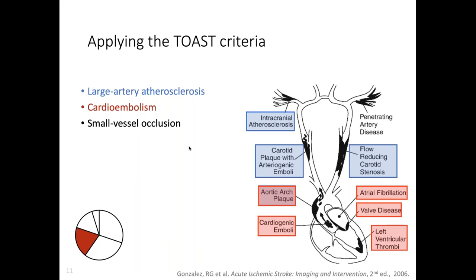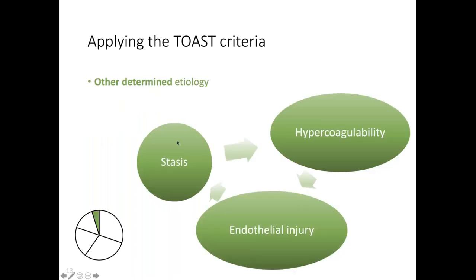Number two in the red boxes are sources of cardioembolic stroke. The biggie we think about is AFib, but don't forget things like valvular disease or someone with an EF of 10% who has an LV thrombus. I put aortic arch plaque on both categories.